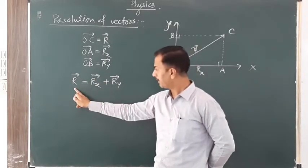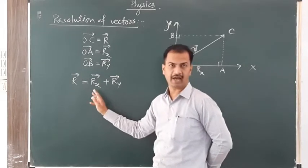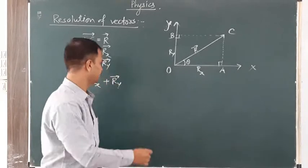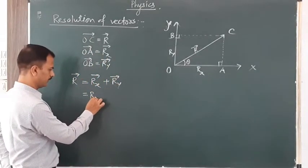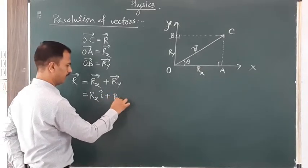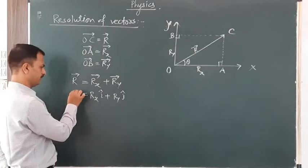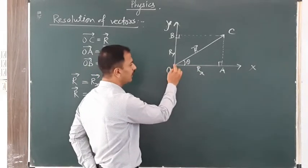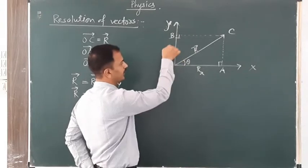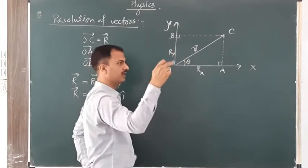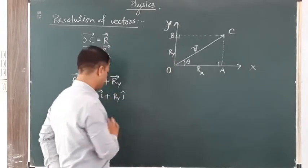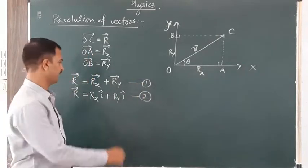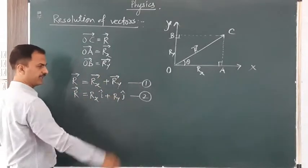From the parallelogram law, R-bar equals R-X bar plus R-Y bar. R-bar is equal to the R-X and R-Y components — the R component along the x-axis and R component along the y-axis. We can write R-X as R-X times i-cap, and R-Y as R-Y times j-cap. Here, i-cap is the unit vector along the x-axis, j-cap is the unit vector along the y-axis, and if there is a third axis z, then k-cap is the unit vector along the z-axis. So R-bar equals R-X·i-cap plus R-Y·j-cap. This is equation number 1.